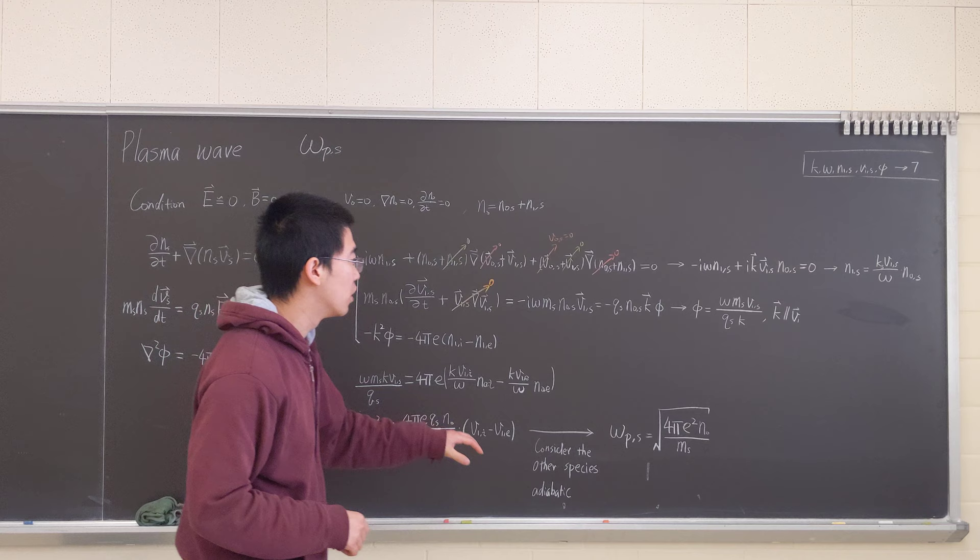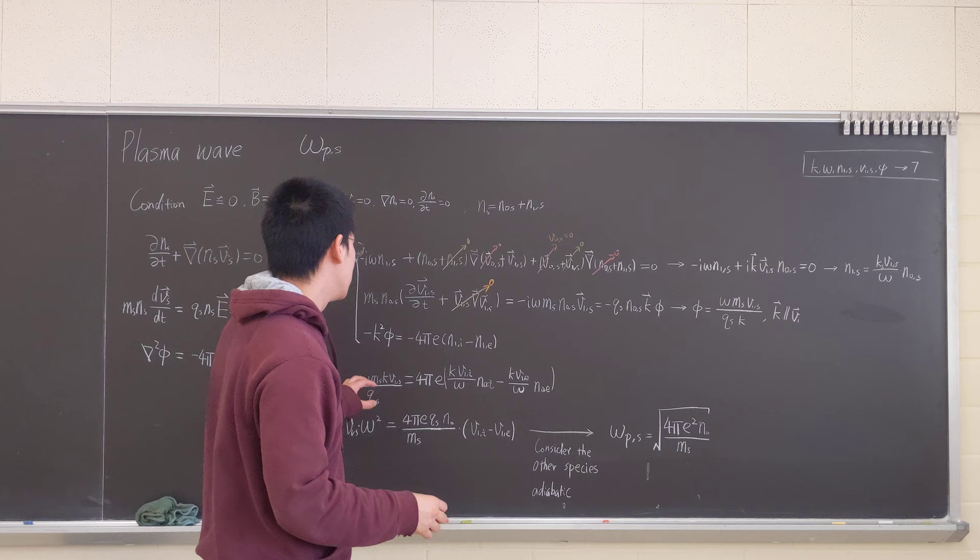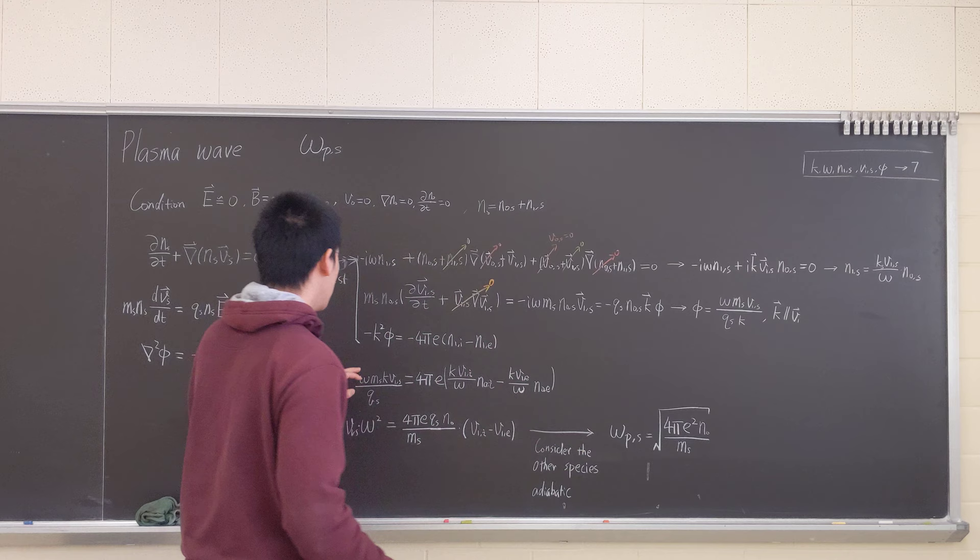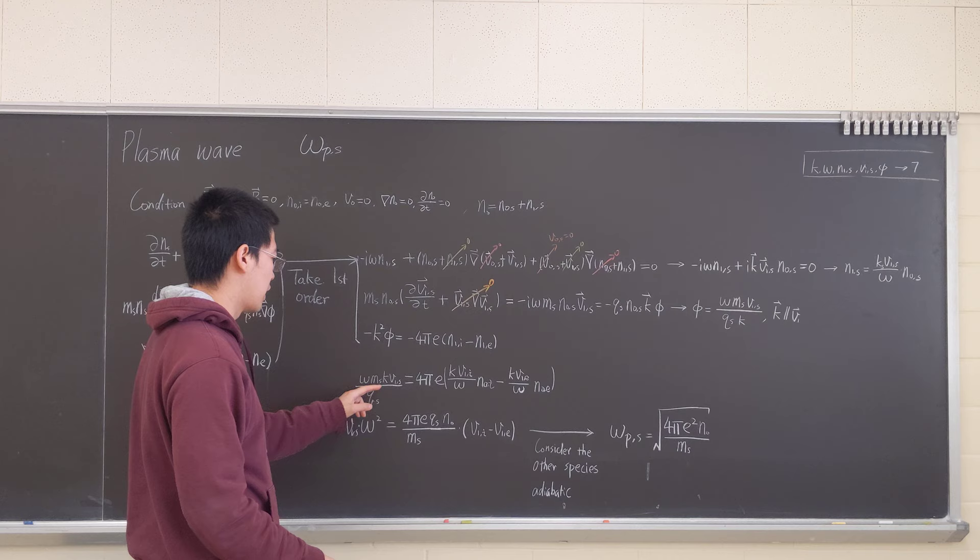We just put negative K squared to substitute del squared. So we substitute this and this into Poisson's equation. So this goes here. K cancels out and the negative sign cancels out. So we have omega M S K V1 over Q S.